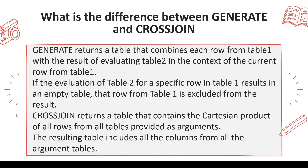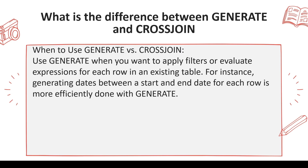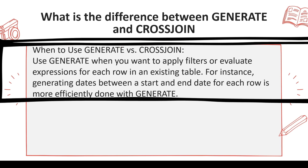While GENERATE can also do a Cartesian product, it has the flexibility of considering the context from the current row. So when to use GENERATE versus CROSS JOIN: if you simply want a Cartesian product, use CROSS JOIN. Use GENERATE when you want to apply a filter or evaluate an expression for each row in the existing table — for instance, generating dates between start date and end date for each row is more efficiently done with GENERATE.